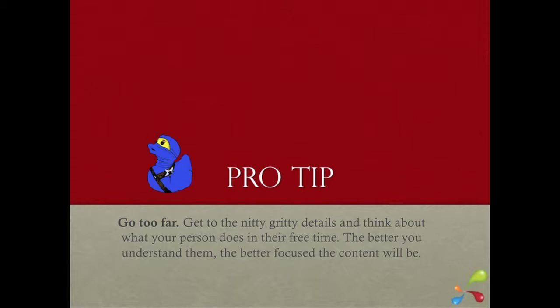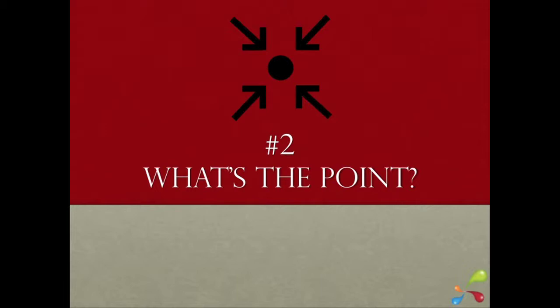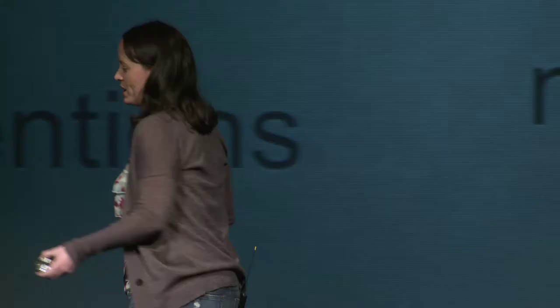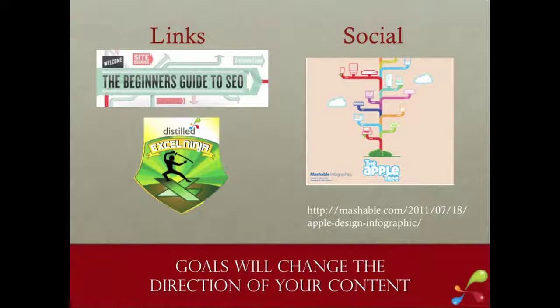The second thing you need to do: what's the point? You've got to have goals. If you create content without goals, it's not going to go anywhere. You have to know what you want to get out of that piece of content. The type of content you create changes depending on what you want to do — if you want traffic, sales, links, mentions, likes, plus ones. Stuff that develops links: things like the Beginner's Guide to SEO. Infographics are largely social — they get you visits, likes, and mentions. Your goals will change the direction of your content.